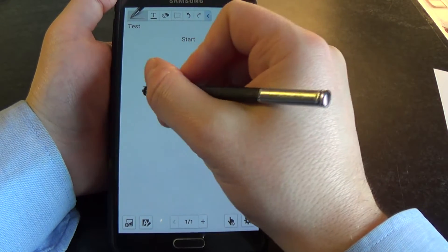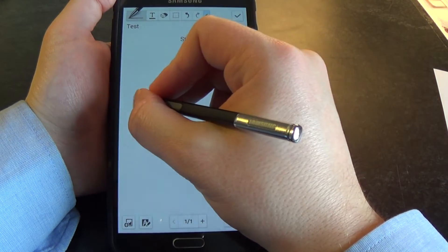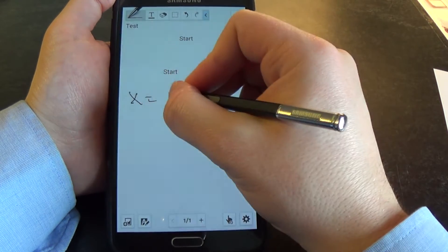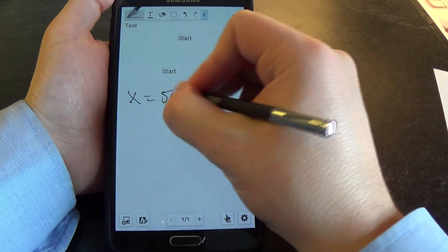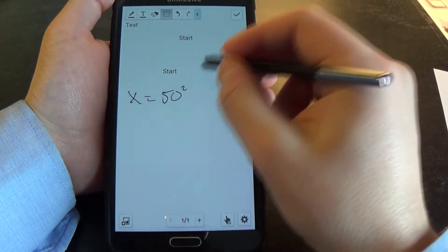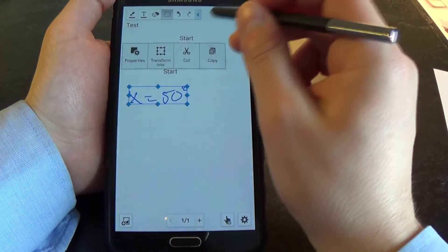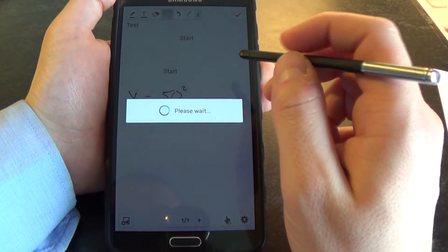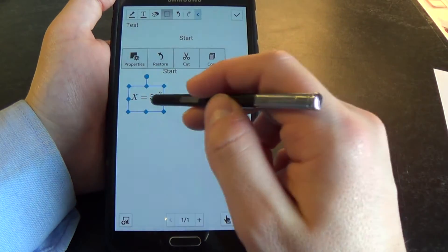And then another little feature is formulas. So if I say X equals 50 squared, select that, transform into, and select formula. See, it puts it in like that for you.